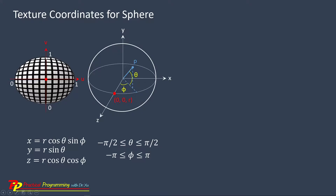This point corresponds to V equal to 0, and here corresponds to V equal to 1. In this spherical coordinate system, this center point in the texture coordinate system corresponds to X equal to 0, Y equal to 0, Z equal to R, where R is the radius of our sphere.